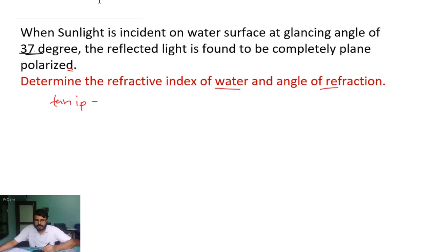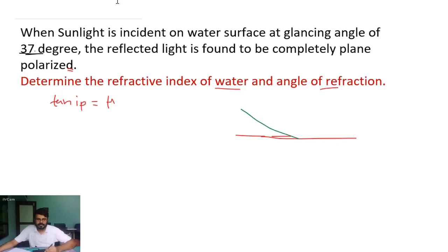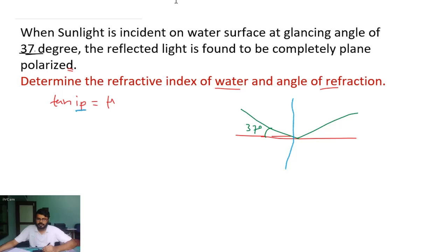According to Brewster's law, the tangent of the polarizing angle ip will be equal to the refractive index of the medium. Suppose this is our medium and the sunlight is incident on the water surface at a glancing angle of 37 degrees. We draw the normal, and we need to determine the refractive index of the water, so we find the angle of polarization ip.